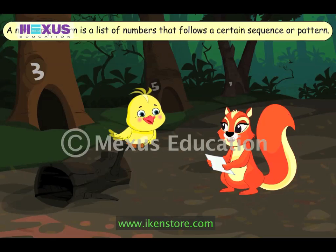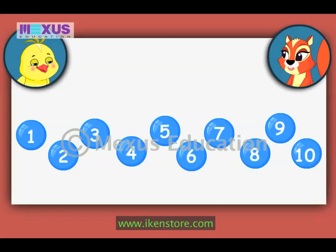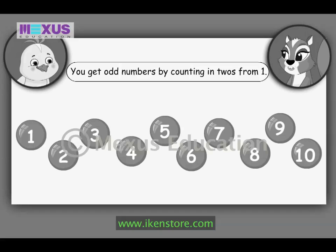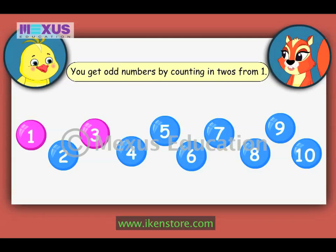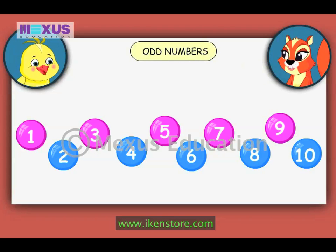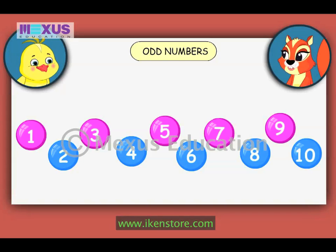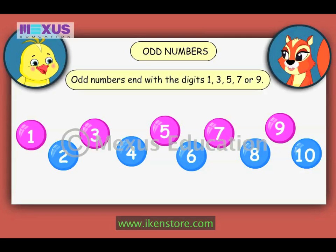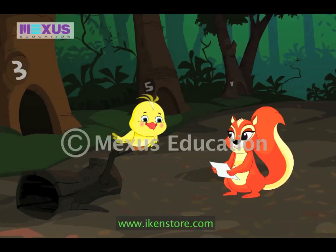These number bubbles will help you understand a type of number pattern you can make by counting in twos. Look, the bubbles have numbers from 1 to 10. I will now count in twos starting from 1: 1, 3, 5, 7, 9. The numbers in the pink bubbles are called odd numbers. You get odd numbers by counting in twos from 1. Odd numbers end with the digit 1, 3, 5, 7, or 9.